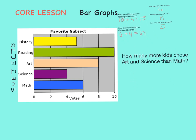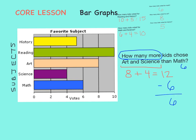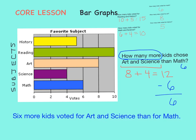How many more kids chose art and science than math? First we'll need to add art and science together. Art received eight votes and science received four votes. Eight plus four equals twelve. The key words here are 'how many more' — that tells us we want to find the difference between art and science and math, so we'll need to subtract. Math had six votes, so twelve minus six equals six. Six more kids voted for art and science than for math.